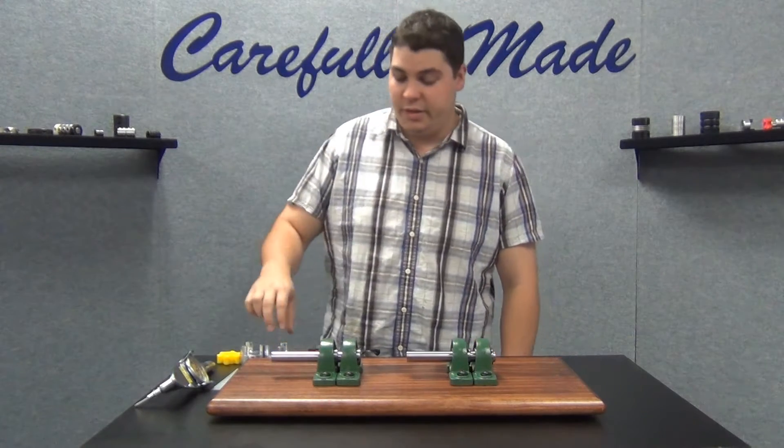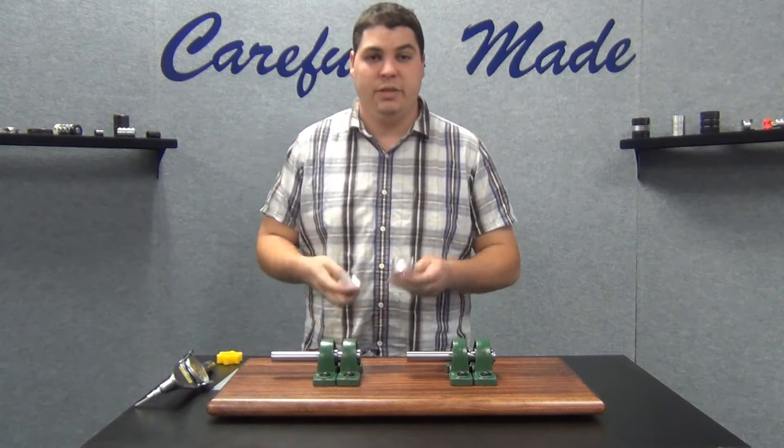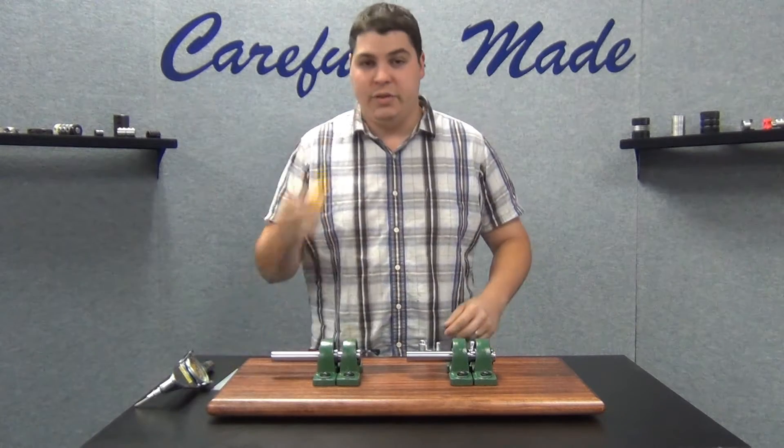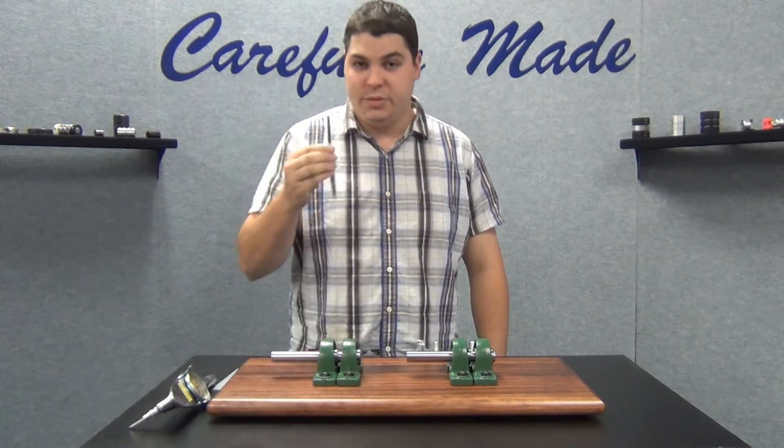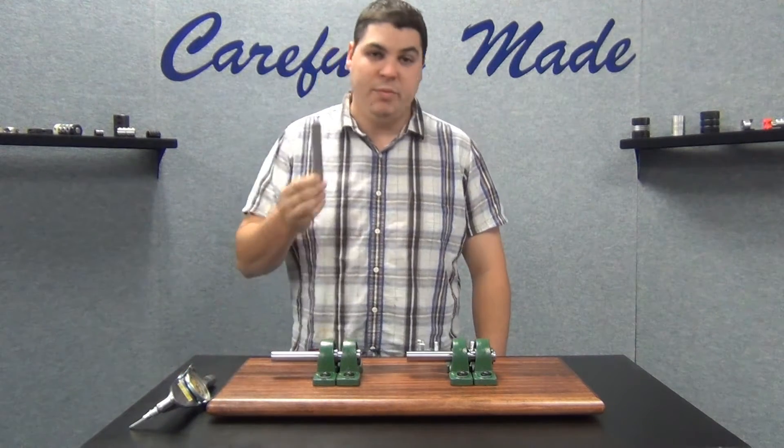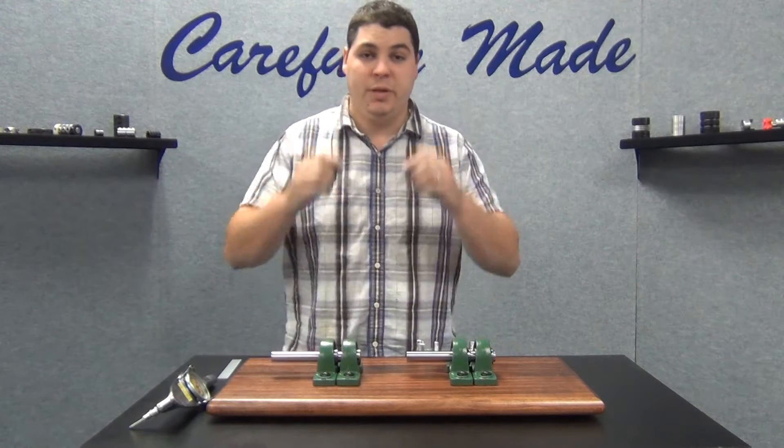For installation today, you'll need your jaw coupling which consists of two hubs and the spider. You'll also need your torque wrench, some shims, misalignment measuring tools, and of course your PPE.